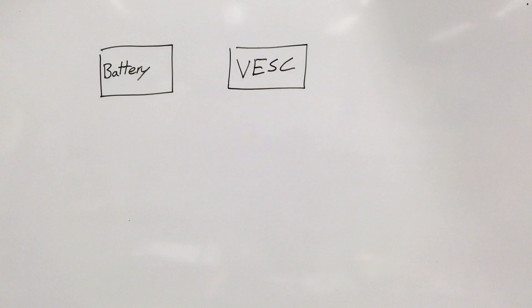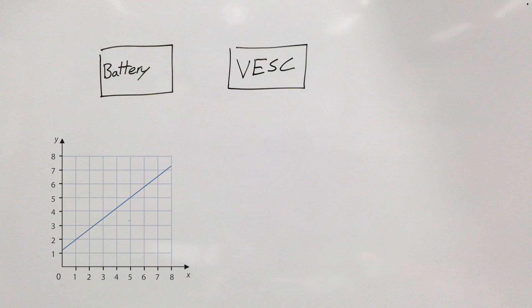So a VESC allows you to fine tune the adjustments in the ESC, while a normal ESC would just provide you with a set standard. For example, a VESC you can adjust a linear acceleration or an exponential acceleration, or a linear deceleration or an immediate deceleration.